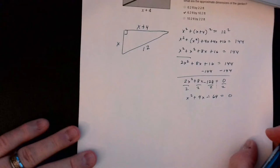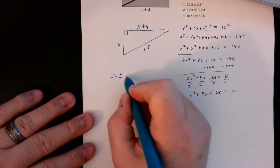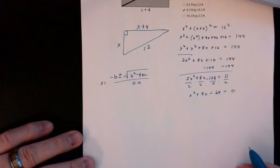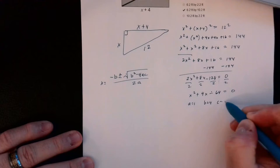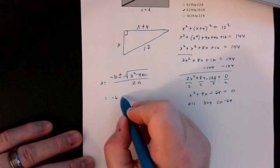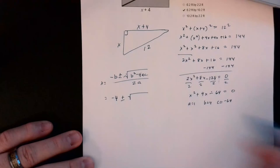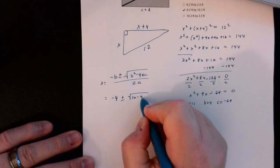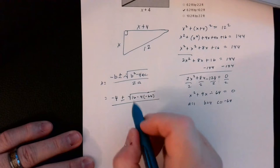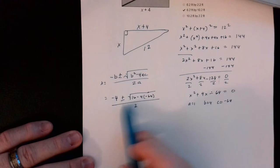The quadratic formula gives us x equals the opposite of b plus or minus square root of b squared minus 4ac, all over 2a. Here a is 1, b is 4, and c is negative 64. So we plug those values in and get negative 4 plus or minus square root of 4 squared minus 4 times 1 times negative 64, all divided by 2 times 1, which is 2.